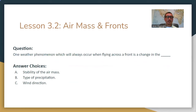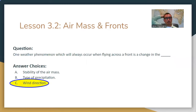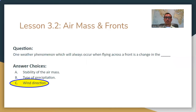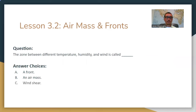Practice question: One weather phenomenon that will always occur when flying across a front is a change in — pause the video if you want — wind direction. When you're flying across a front, you're crossing two different types of air mass — cold and warm — and you're going to have different wind directions. Another question: The zone between different temperature, humidity, and wind is called a front.